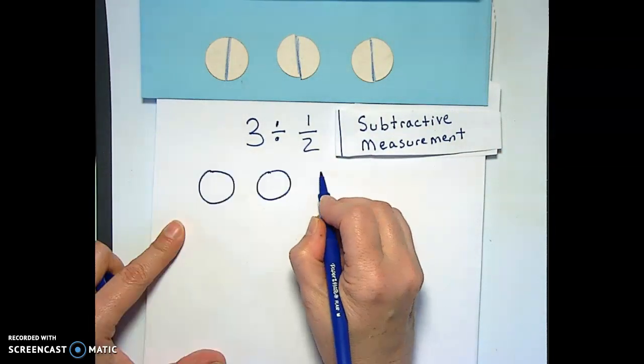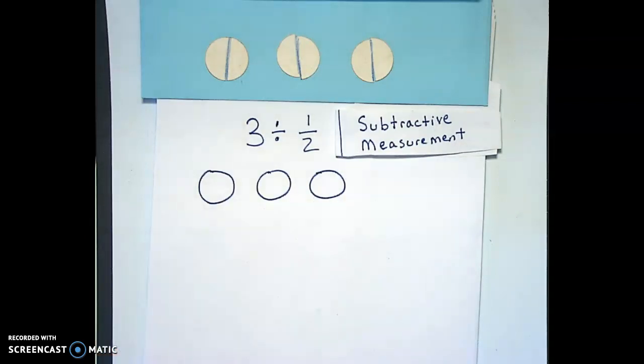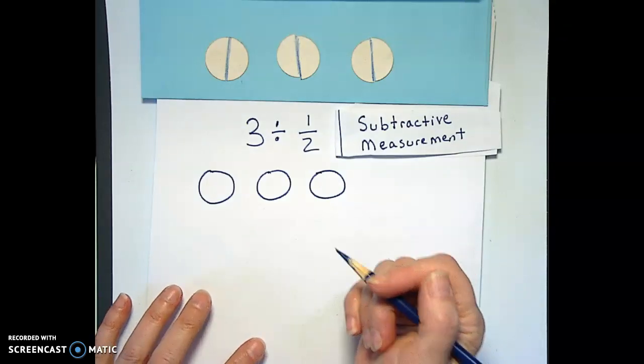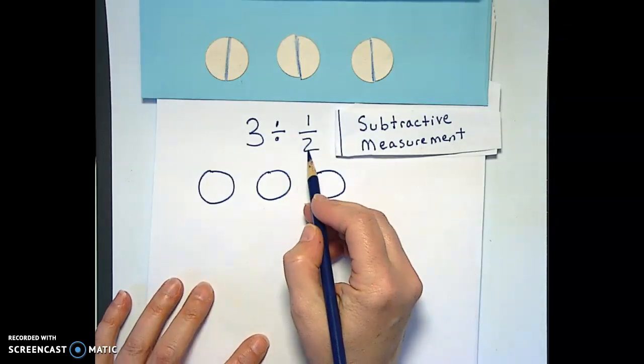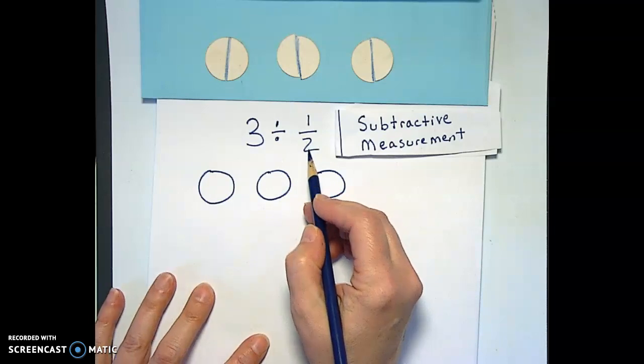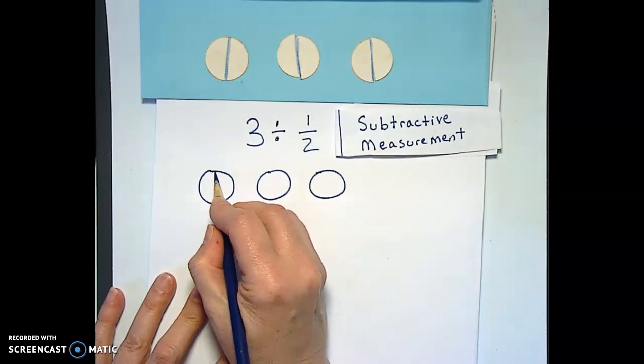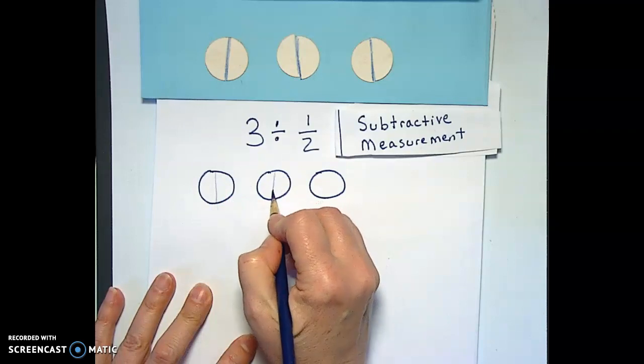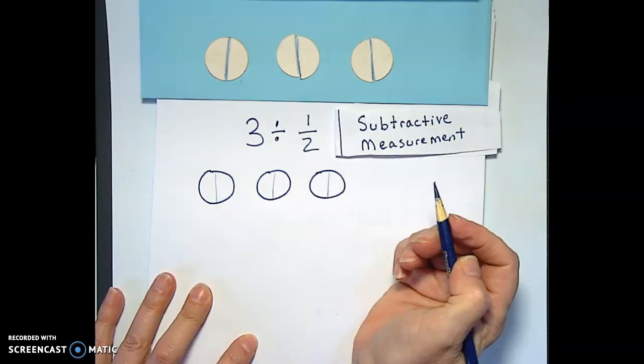First we're gonna draw three whole things. I like circles for this, but you can totally use whatever shapes you want to as long as they're easily cut. And then we determine how many 1 halves we can take from three wholes. So you can go like this.